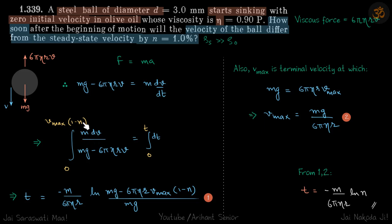The velocity, because it is dropped from zero velocity, so the limits of v will go from zero to vmax times 1 minus n. So it is saying one percent, so let's say this n is 1 by 100. So the limits of v is 0 to vmax times 1 minus n, and time goes from 0 to t. This is what we need to find.